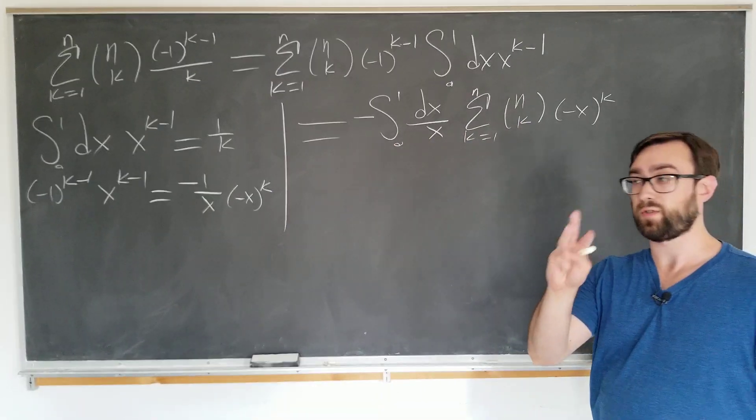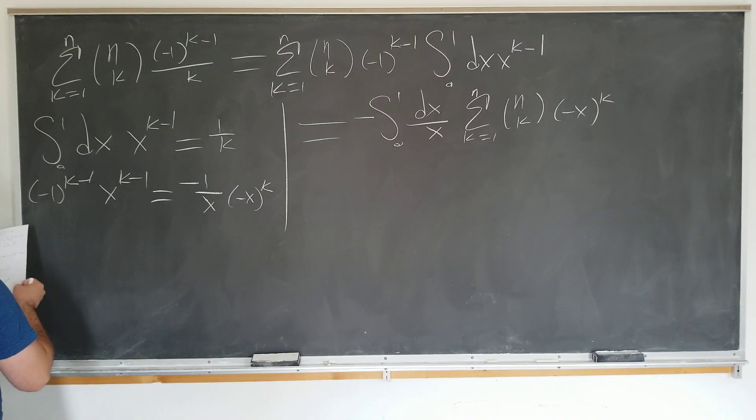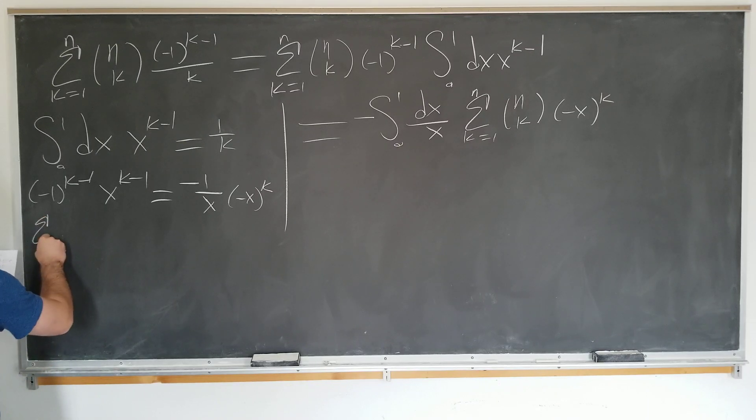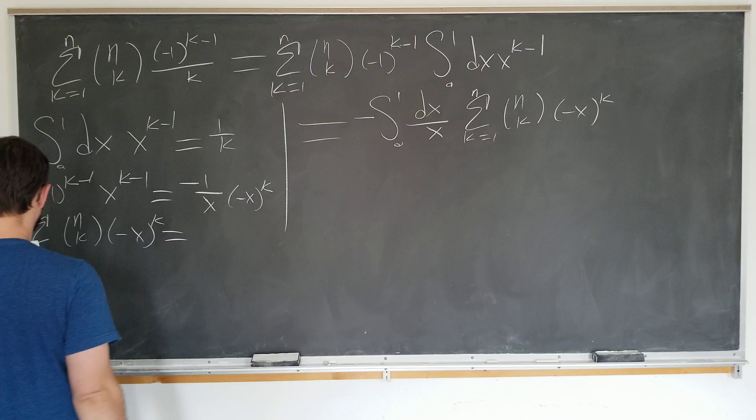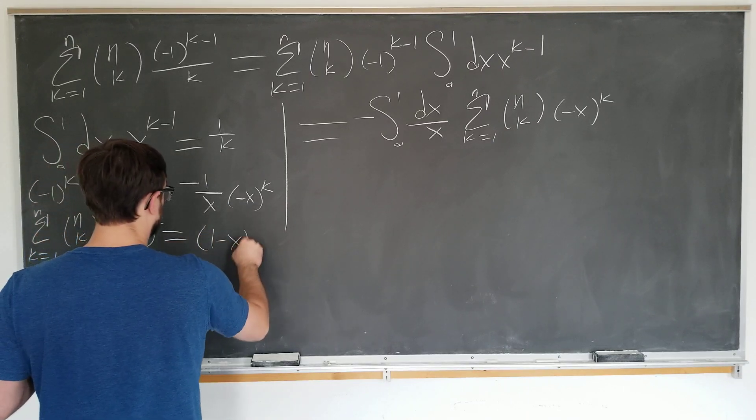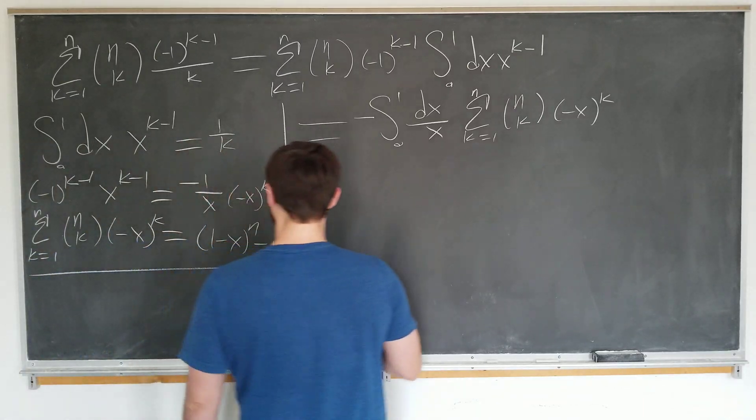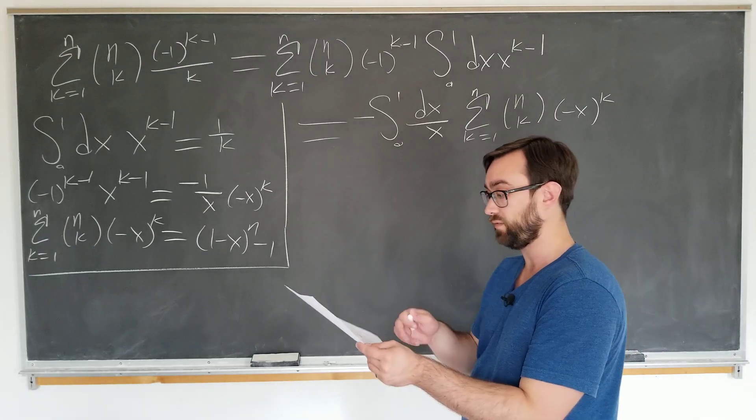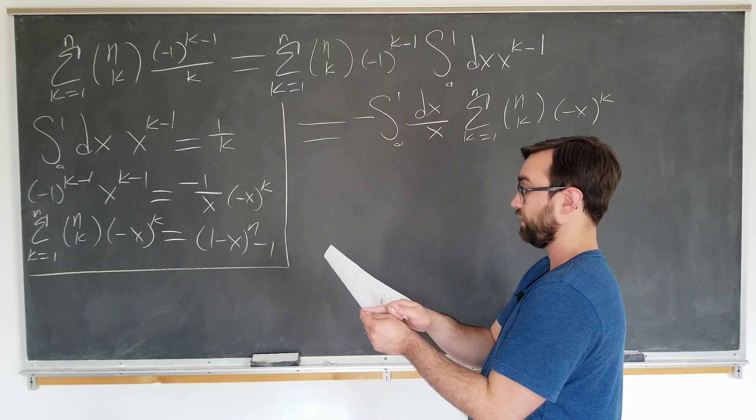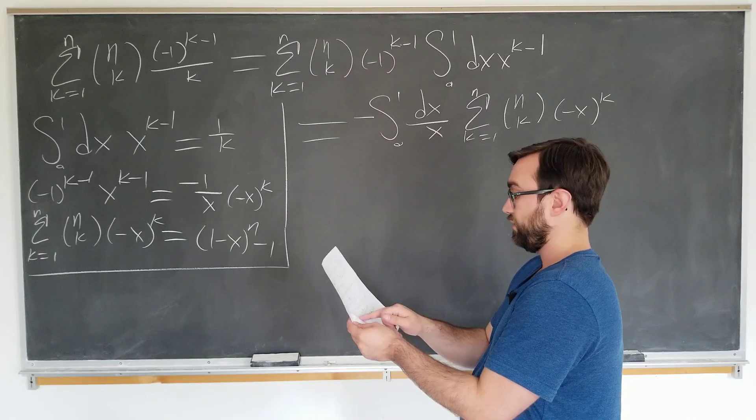We're going to note that the sum as k goes from one to n, n choose k, minus x to the k is actually equal to one minus x to the nth power minus one. Why is this true? Well it's pretty straightforward actually. Make sure I get it right here first. See I just have to use my notes. There are just so many tricks in this video I can't do it without my notes. Yeah so sum k goes from one to n, n choose k minus x to the k. Exactly okay.